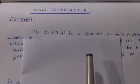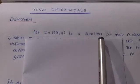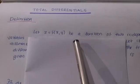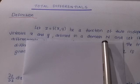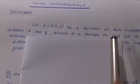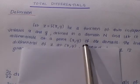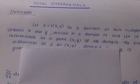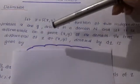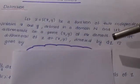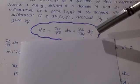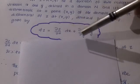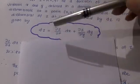Let z = f(x, y) be a function of two independent variables x and y, defined in a domain N. Let it be differentiable at a point (x, y) of the domain. The first differential of z at (x, y), denoted by dz, is given by dz = (∂z/∂x)dx + (∂z/∂y)dy. Here ∂ is the partial derivative symbol and d is the total derivative.